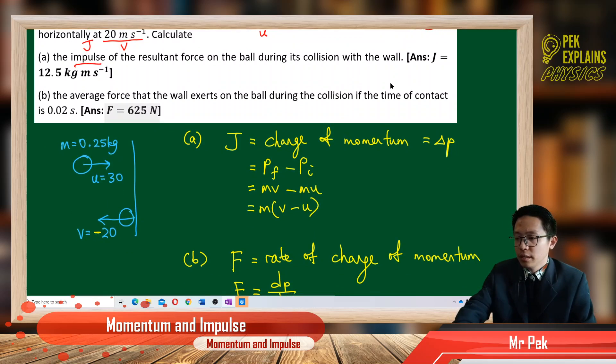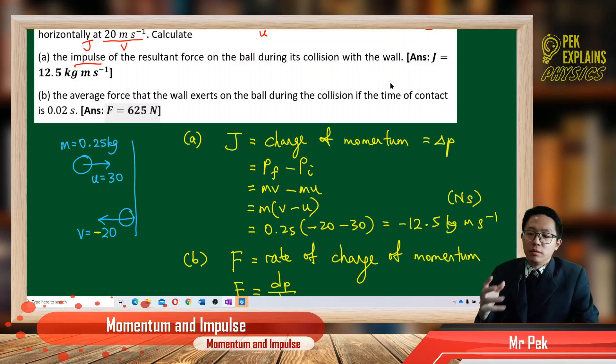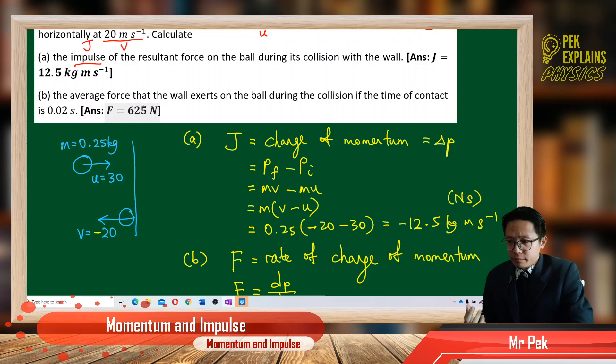Then we just substitute the information. We already have the mass, 0.25. And then the final velocity, negative 20, Mb minus the initial velocity, 30. And what do we get? We got negative 12.5 kilogram meter per second. Or you can also put the unit as Newton second. Impulse has two units. Either kilogram meter per second or Newton second.